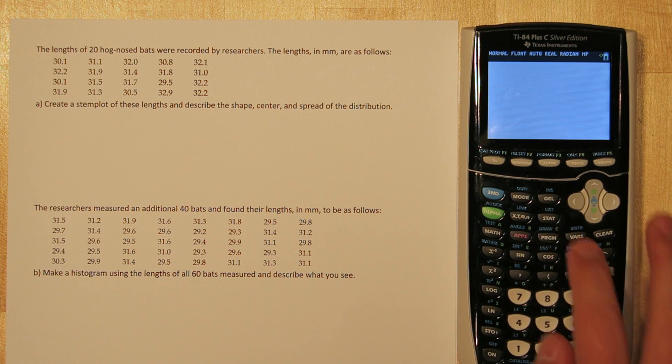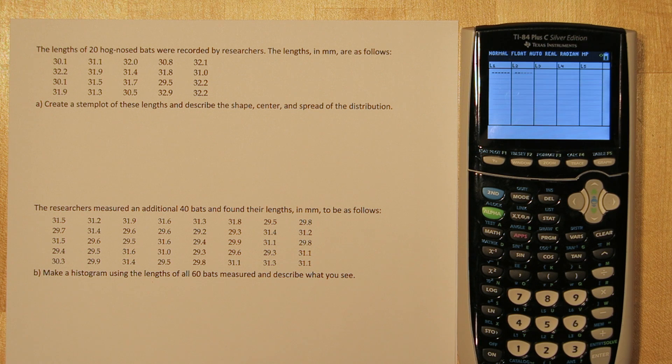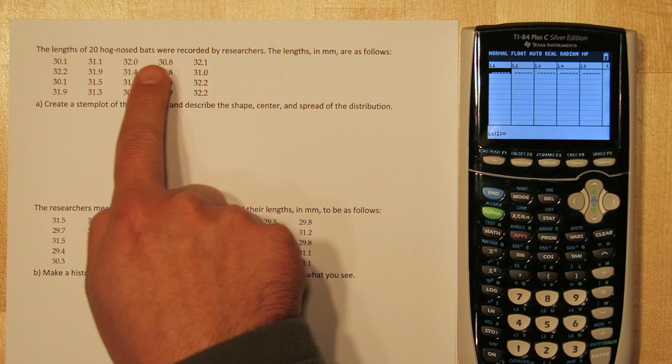Start by pressing the STAT button, then press ENTER. This is our list, and in list 1 right here we're going to input all of the different bat lengths.